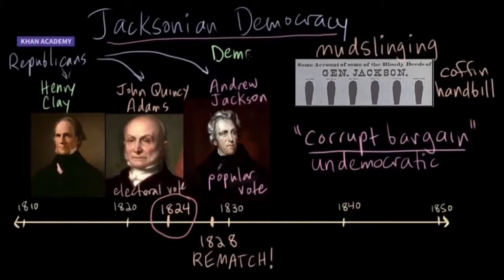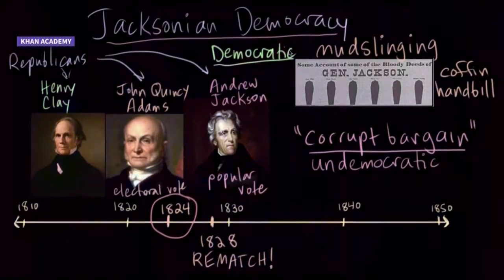A lecture from the Khan Academy put it this way: In the previous election, all of the candidates had been Republicans in one form or another. But now the Republican Party is going to start to fade away, and the Democratic Party will come to the fore. And this is the same Democratic Party that is still in existence in the United States today.